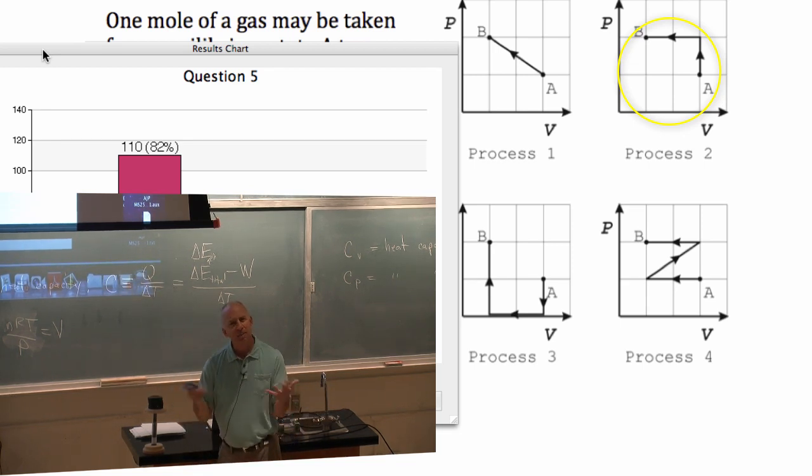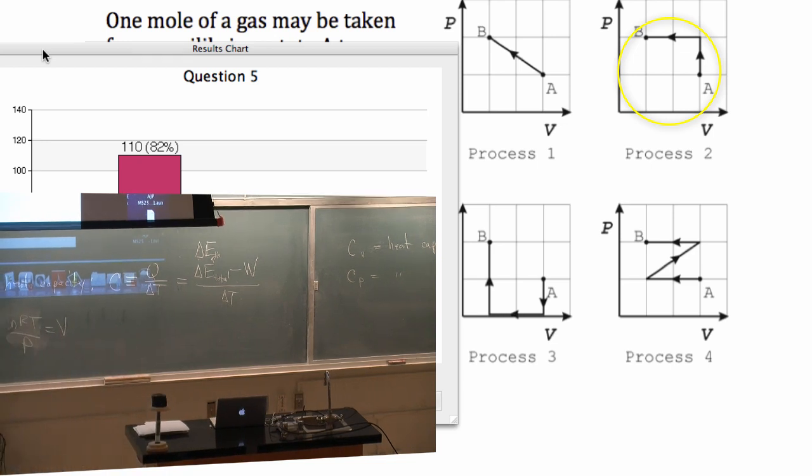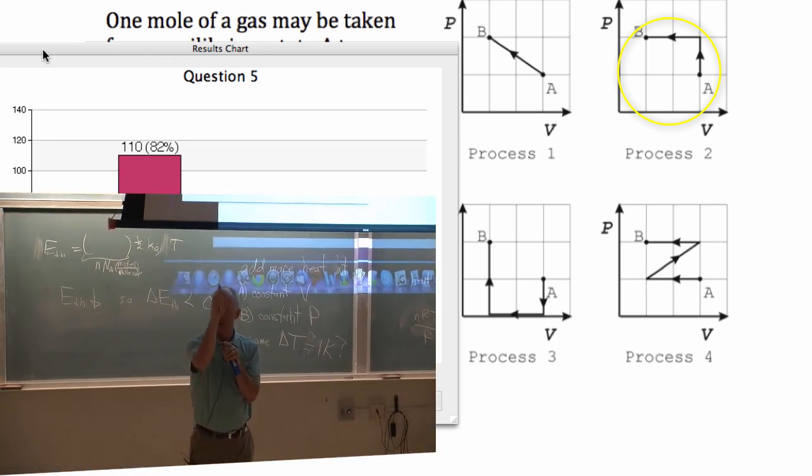I know I've done something to interact with it because the state is changing. How much work energy am I doing along a vertical curve where the volume isn't changing? Remember work is the area underneath the curve. How much area is there underneath a vertical line?